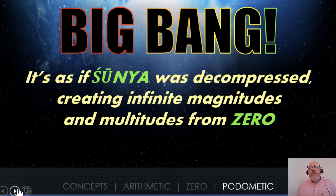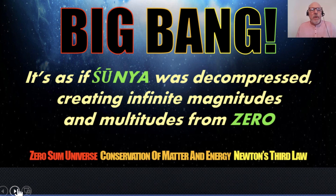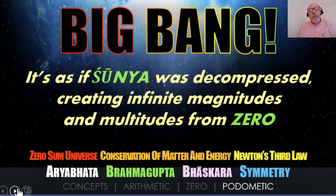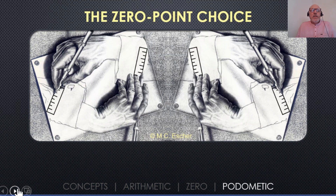If we consider going right back to the original Shunya or the Big Bang, it's as if Shunya was decompressed, creating infinite magnitudes and multitudes from zero. We've got various theories such as the zero sum universe, conservation of matter and energy, Newton's third law — for every action there's an equal and opposite reaction — the mathematics of Aryabhata, Brahmagupta and Bhaskara, blended with the concept of symmetry. All of that comes together as Podomatic: symmetric zero-based mathematics.